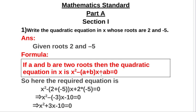So a and b are two roots, so we have to find the equation. The equation is x² minus sum of two roots times x plus product of two roots equal to 0.